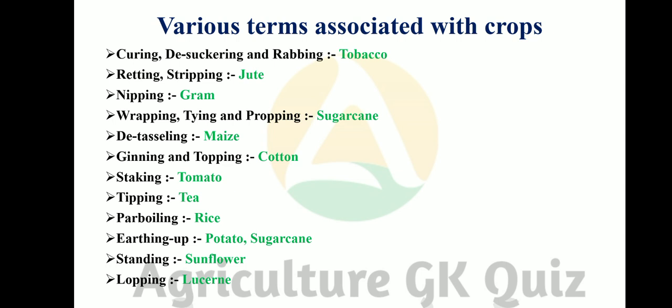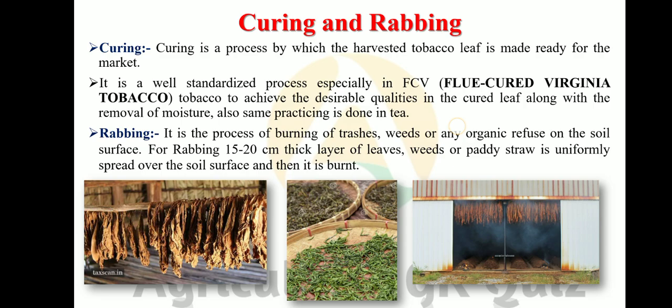We also cover stacking in tomato, tipping in tea, parboiling in rice, earthing up in potato and sugarcane, stirring in sunflower, and lopping in lucerne. First we discuss curing and raabbing.